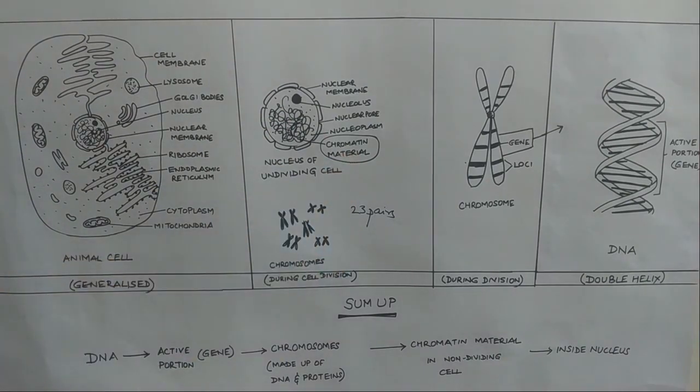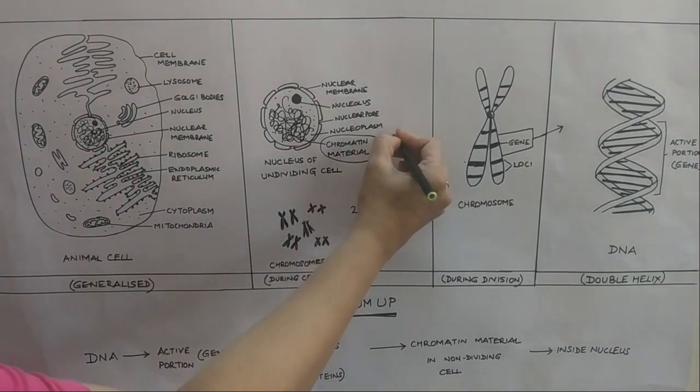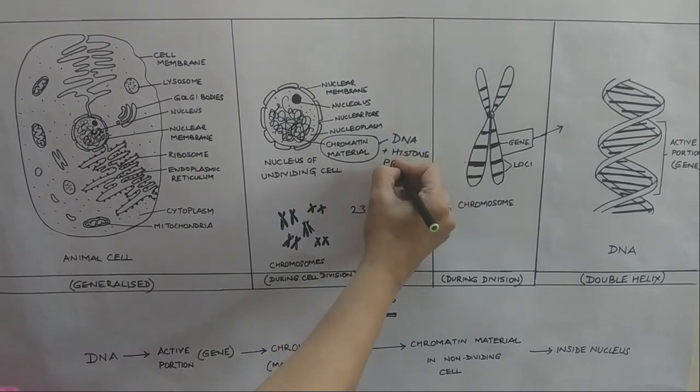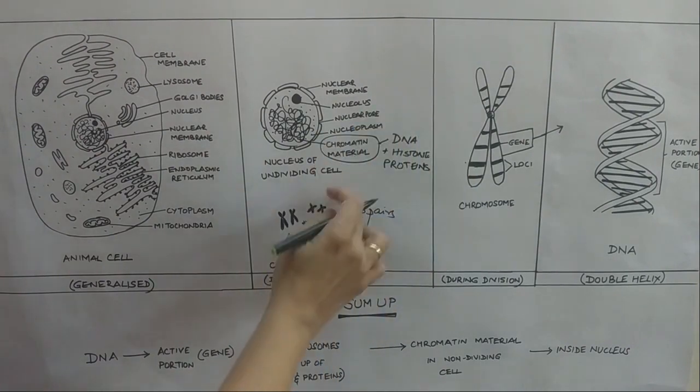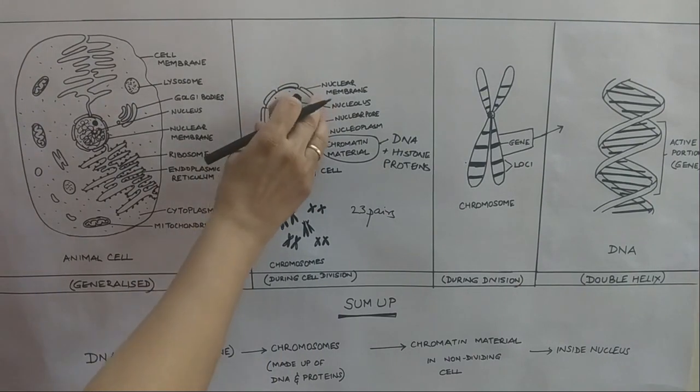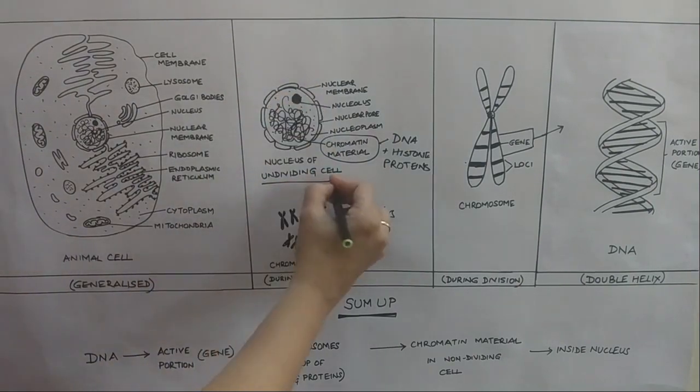This chromatin material is made up of DNA and histone proteins. So chromatin material is this entangled mass. Now, this is what we see in case of an undividing cell.